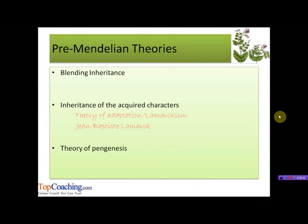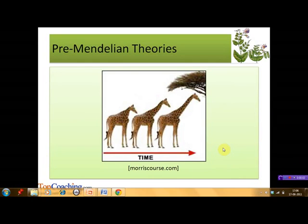The second part is the inheritance of acquired characters: the physiological traits acquired by an organism during its lifetime are transmitted to its offspring. Lamarck gave the example of the giraffe — he believed that the ancestors of the giraffe had shorter necks, and due to constant stretching to reach leaves on higher branches, their necks became longer and longer. He also gave the examples of vestigial organs in human beings, which became vestigial over time due to their constant disuse.